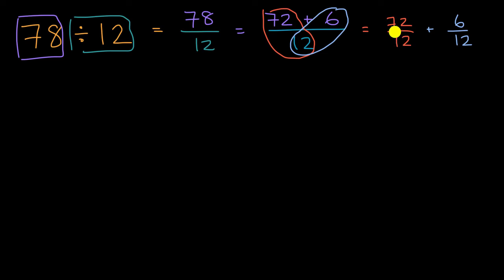Now, what's 72 over 12? We know that 72 is the same thing as 6 times 12, so this is going to be 6 times 12 divided by 12. Well, that's just going to simplify to 6.